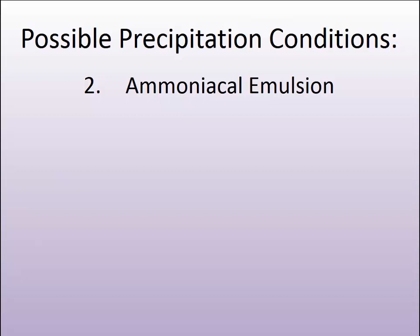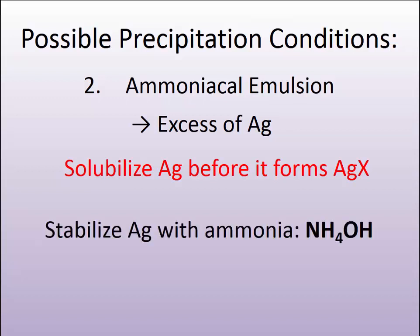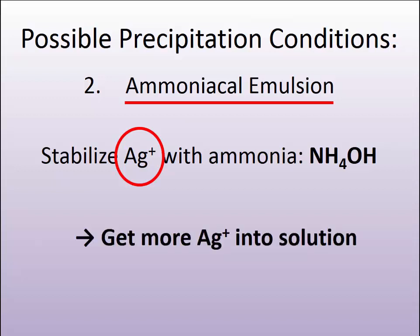The other condition is the opposite. We like to form an emulsion that is in excess of silver. To do this, we have to solubilize the silver before it has a chance to make a halide, so we need to stabilize it. What we use as a stabilizer is ammonia. When ammonium hydroxide is added, it is known as an ammoniacal emulsion — meaning an emulsion that contains ammonia. The ammonia stabilizes the silver ion in solution so that we can get more of it into the solution to react with the halide.